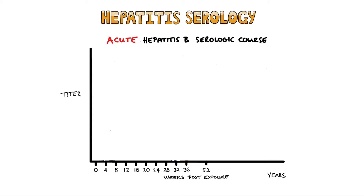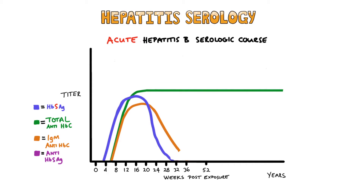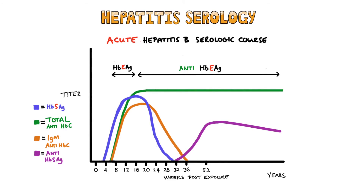This is a graph showing the typical serology for a person contracting and clearing hepatitis B. You see initially the hepatitis B surface antigen rising, followed soon after by an increase in the IgM anti-hepatitis B core antibodies and the total anti-hepatitis B core antibodies. Then we see the hepatitis B surface antigen level drop, as well as the IgM anti-hepatitis B core antibody levels, followed by the formation of the anti-hepatitis B surface antigen antibody, which shows immunity. The hepatitis B E antigen is present for only a few weeks, before the anti-hepatitis B E antibody is formed.